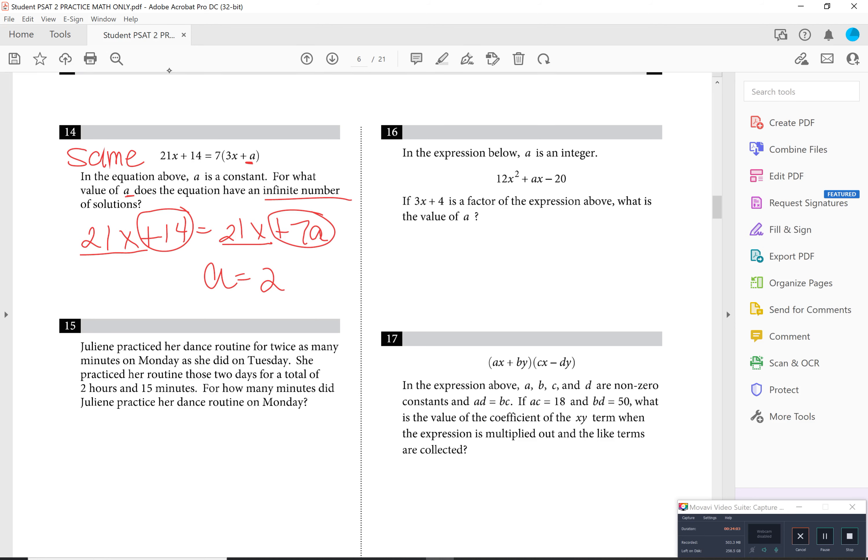The next question, Jolene practiced her dance routine for twice as many hours on Monday that she did on Tuesday. Here's Monday. Here's Tuesday. If she practiced X hours on Tuesday, then on Monday she practiced 2X. It says here, she practiced her routine for those two days for a total of 2 hours and 15 minutes. The question is, how are they asking you to answer this? They're asking in minutes. So I'm going to convert 2 hours to minutes. So the total minutes that she practiced for those two days is 175. So basically, I create now an equation where I have 2X plus X equals 175, and I solve for X.